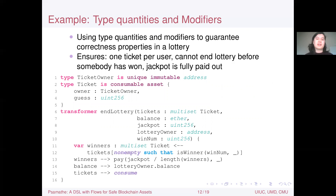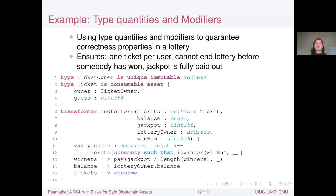Here's an example using type quantities and modifiers to guarantee correctness properties in a lottery. We want to ensure: each user has at most one ticket, the lottery cannot end before somebody has won, and the jackpot is fully paid out so no money gets trapped in the contract. We create two new types: ticket owner, which is a unique immutable address (ensuring at most one ticket owner per address), and the ticket type, which is a consumable asset so tickets won't be accidentally lost but can be destroyed at the end.